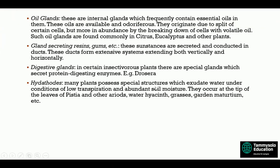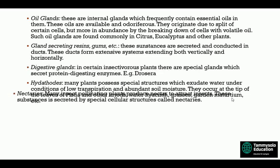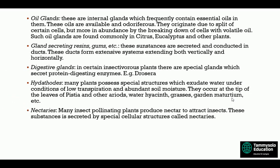Hydathodes: many plants possess special structures which exude water under conditions of low transpiration and abundant soil moisture. They occur at the tips of leaves of Pistia and other areas, water plants, grasses, garden mint, and garden nasturtium. Nectaries: many insect-pollinated plants produce nectar to attract insects. This substance is secreted by special cellular structures called nectaries.